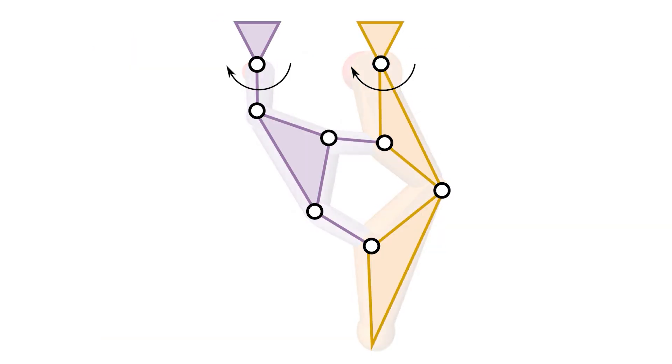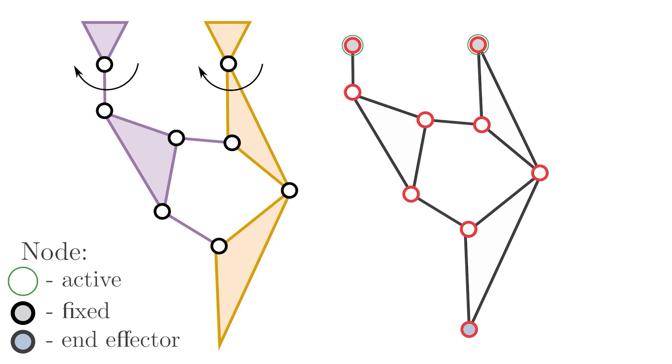For mechanism analysis, we use the graph representation with nodes encoding the joints and edges encoding rigid links.